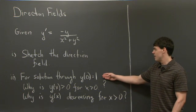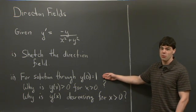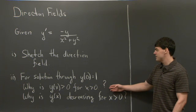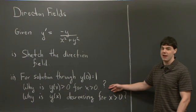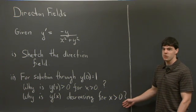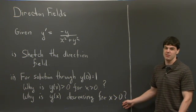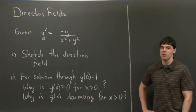And then secondly, given the curve that goes through y of 0 equals 1, we're asked several questions about it. Why is y of x greater than 0 for x greater than 0? And then why is y of x decreasing for x greater than 0? I'll let you think about this for a moment, and I'll get back.